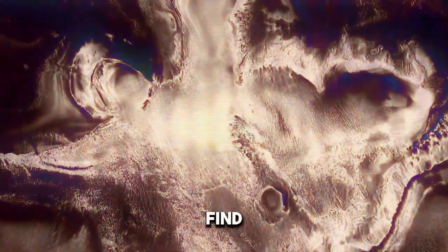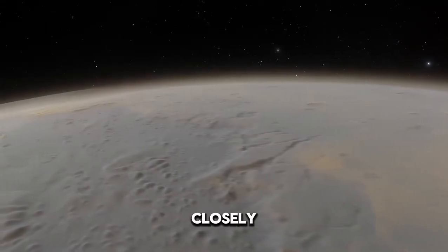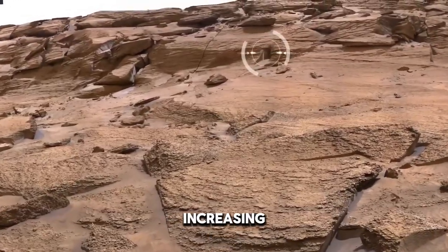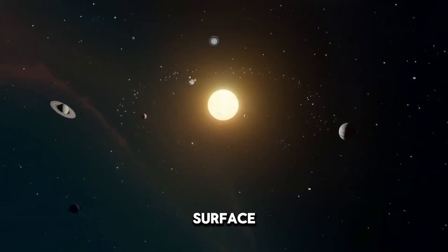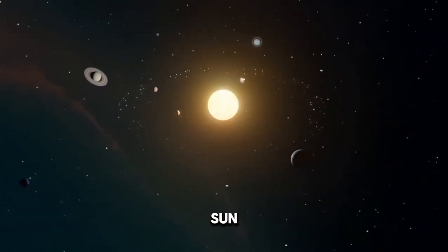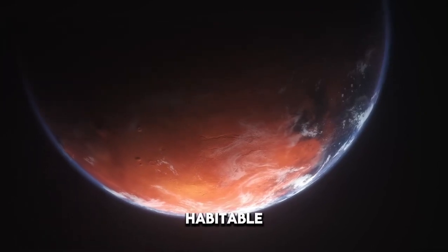Scientists are on the quest to find twin Earths, planets that closely resemble our own. A twin Earth is similar in size, increasing the likelihood of having a solid, rocky surface. It's also vital for a planet to orbit a star, much like our Sun, at a suitable distance within the habitable zone.